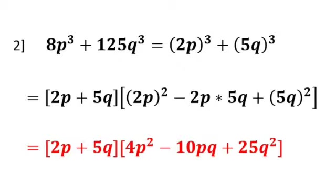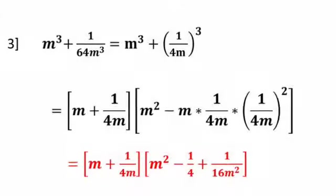I think you have understood now. Let's go with one more example: m³ + 1/(64m³). Here again a + b — what is your a? m. And what is your b? Cube root of 64 is 4, and cube root of m³ is m. So b = 1/(4m). So a + b is m + 1/(4m).